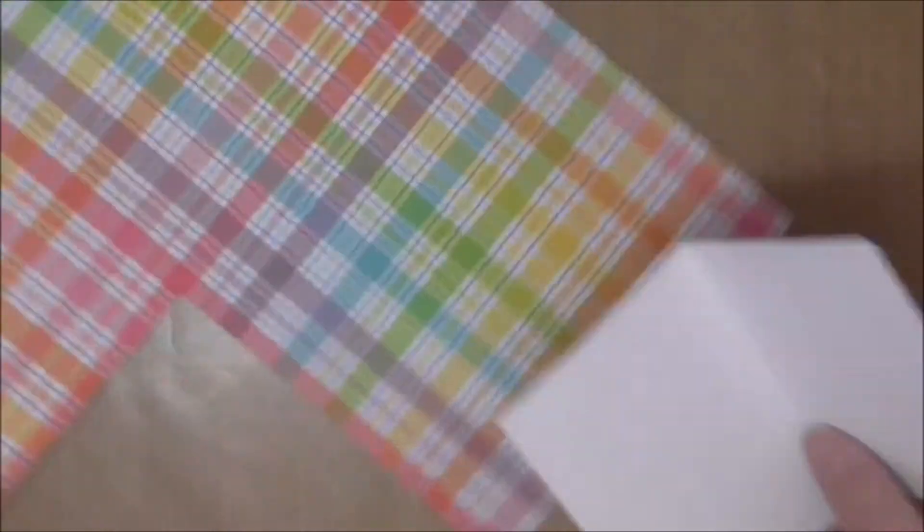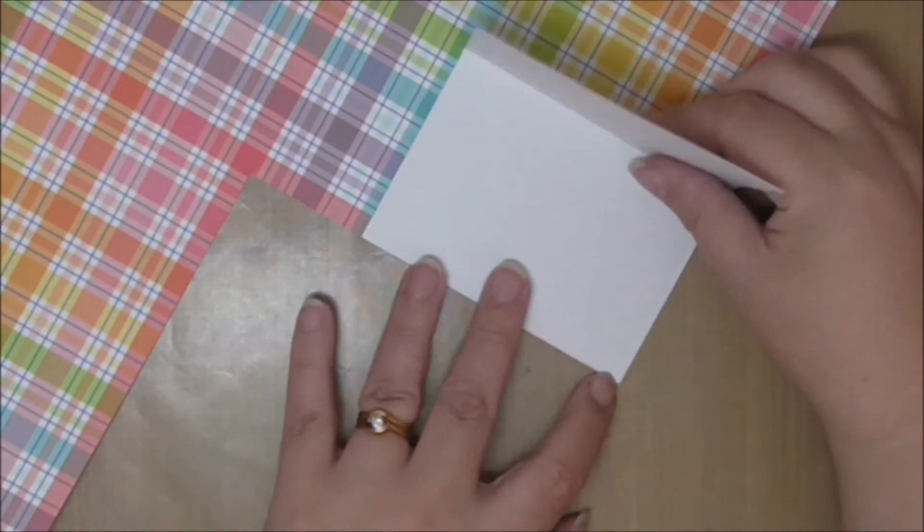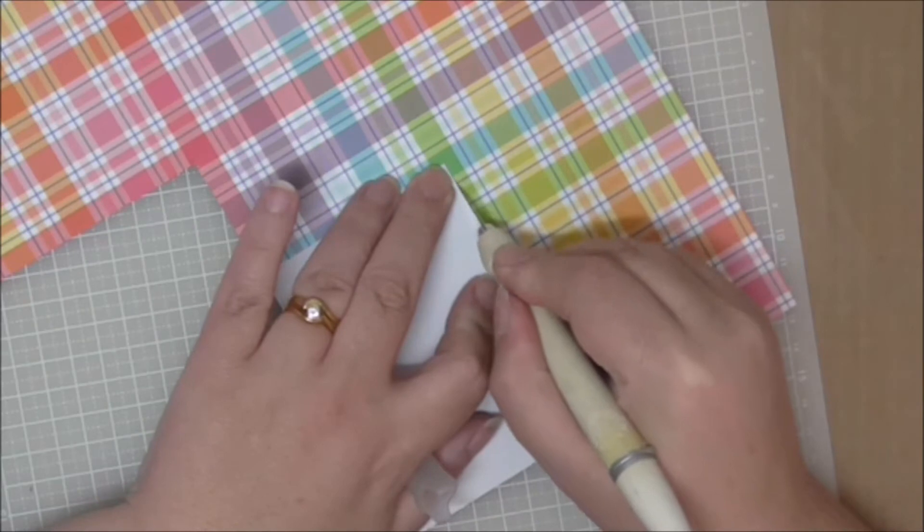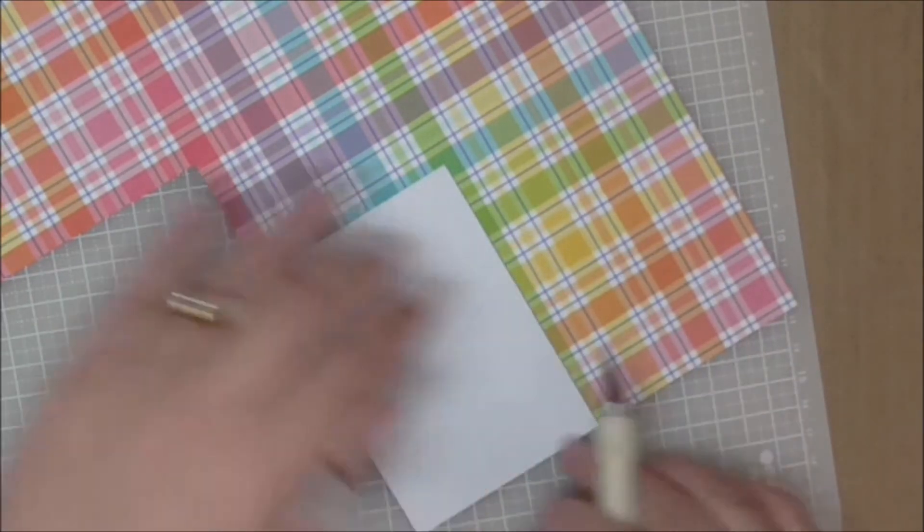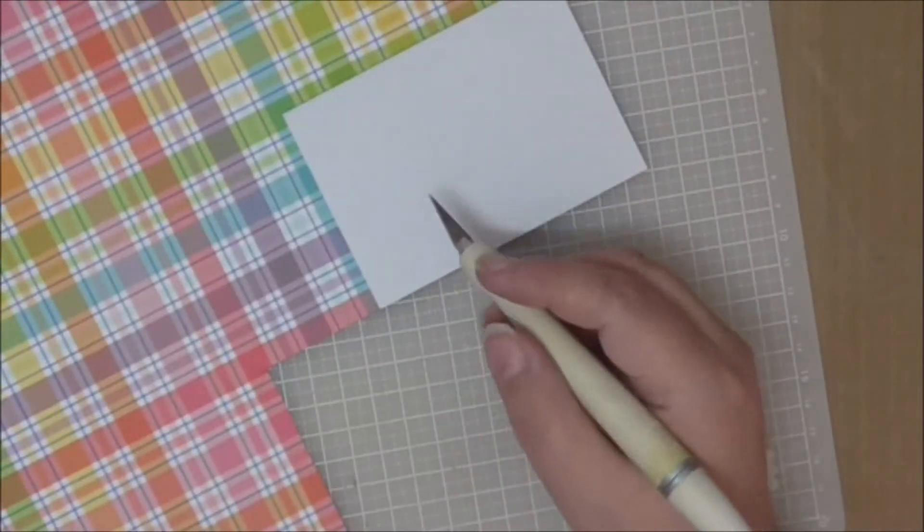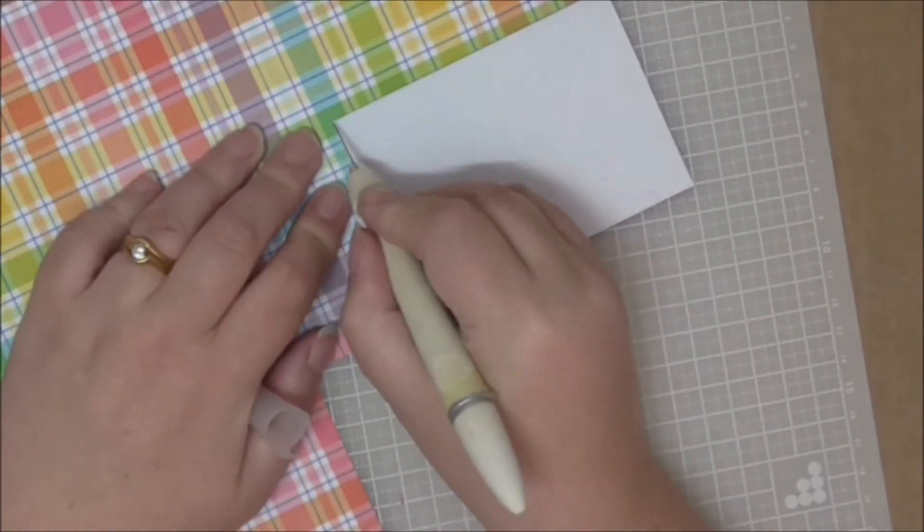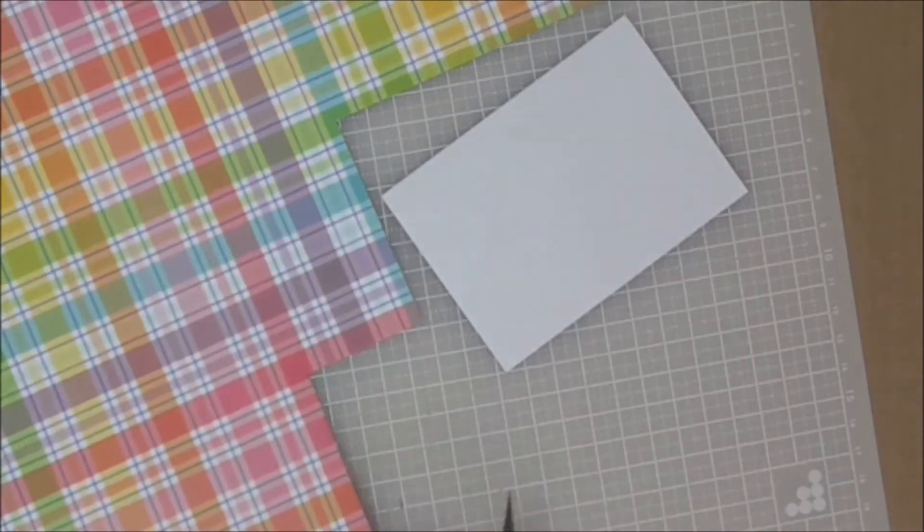Now let's put it all together. I have put adhesive onto the front of my mini card base and I'm popping it onto the pattern paper. I've tried it the other way around but it is much more effective and efficient to put the card onto the paper instead of the paper onto the card. You can just see what you're doing. There's more control, especially with the big 12x12 sheet. I'm trimming around it with my craft knives.